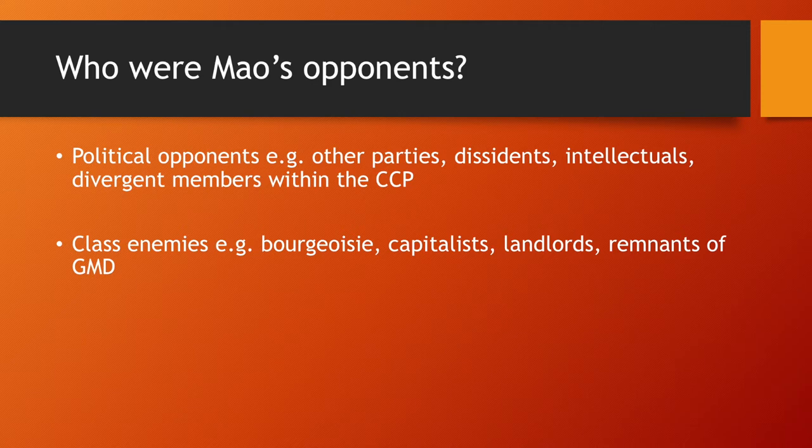Class enemies included the bourgeoisie and capitalists. Many of Mao's political opponents were labeled as class enemies, so it's hard to differentiate between class enemies and political enemies — there's a lot of overlap in the methods he used and the opponents he purged. If you're writing an essay, you can decide which point to put into which paragraph.